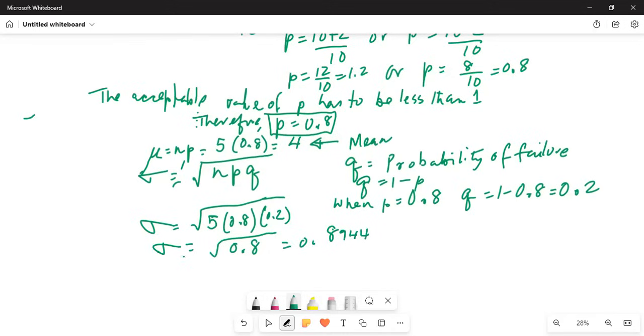That's your standard deviation. And the variance, sigma square, if you want to find out, it is the square of 0.894, which in turn will be 0.8. The hint that I gave, or the tip that I gave, is to be aware of the probability of failure, which is 1 minus probability of success. In this case, 1 minus 0.8 is 0.2. So the mean of this distribution is 4, and the variance is 0.8, and the standard deviation is 0.894.